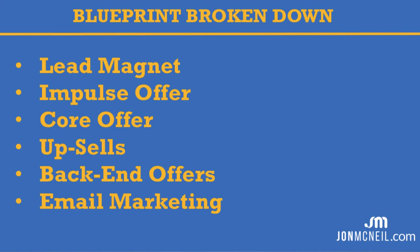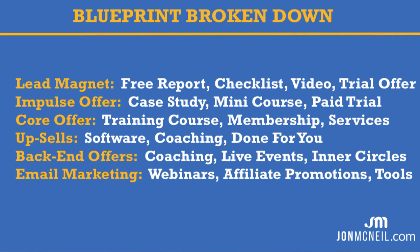The next component is the core offer. The core offer can be additional training, software, or services — it's going to help that person get to their desired result. That can range from $37 to $47 up to $97. Of course, there may be additional upsells — maybe some done-for-you components, some coaching, or different services that you can offer. These are all adding to that core offer, basically helping the person get closer to their desired result. There are also a lot of back-end offers you can offer to your leads and prospects. Email marketing is a huge component of this whole system when you're talking about making a hundred dollars per day, because a lot of money is in the follow-up sequence.